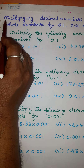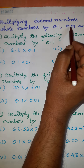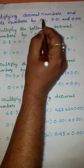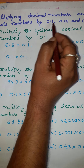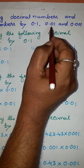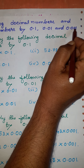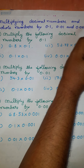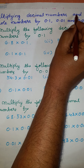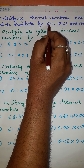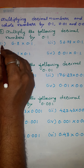Dear children, we shall learn about multiplying decimal numbers and whole numbers by 0.1, 0.01, and 0.001. So, 0.1 means 1 out of 10, one part of 10 things. 0.01 means 1 out of 100. 0.001 means 1 out of 1000. So these are the decimal numbers. To begin with, I will explain how we can multiply decimal numbers by decimal numbers like 0.1, 0.01, and 0.001.